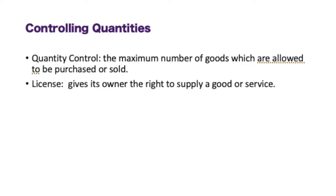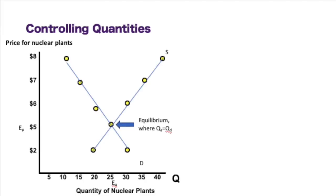Now, the quota is a government limit on goods bought and sold. We also see that a license gives its owner the right to supply a good or service. Now we're going to look at this model for nuclear power plants.